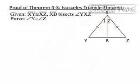So let's prove the Isosceles Triangle Theorem. To do this, we're going to need to draw an auxiliary line, which is what this dotted red line is — segment XB.